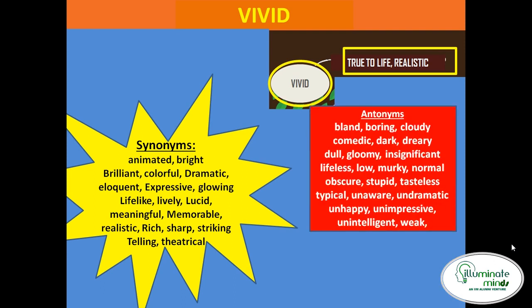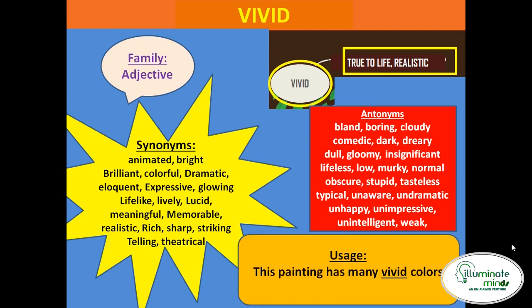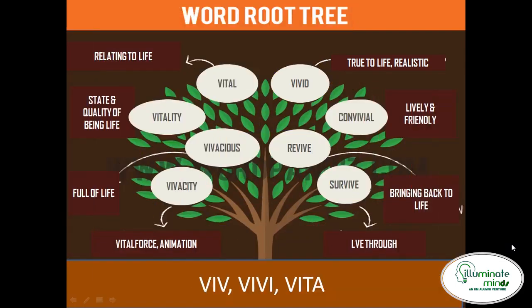Antonyms for vivid are: bland (used for tasteless, ubla hua khana ke liye), boring, dark, gloomy, insignificant, lifeless, stupid, tasteless, obscure — obscure means vague. Word family is adjective. Usage: the painting has many vivid colors — painting mein bahut hi jiwanth rang hain, itne achche hain ki dekh kar aisa lagta hai ki ye painting something real lag rahi hai.